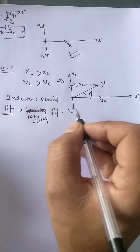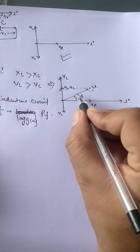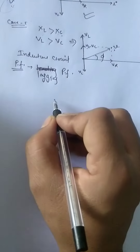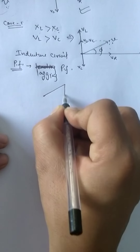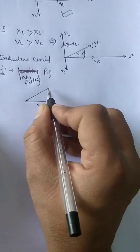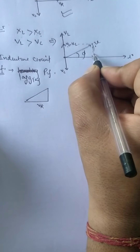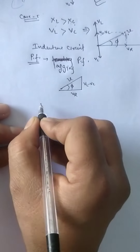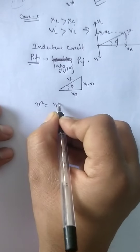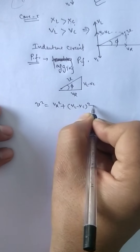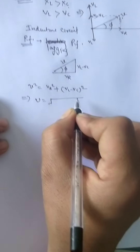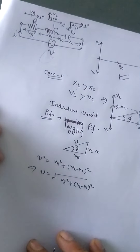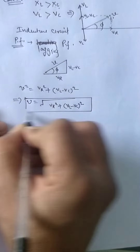Let's prove it with the impedance triangle. We can see this triangle — for the first case, Vr is the base, Vl − Vc is the height, and V is the hypotenuse. So V squared equals Vr squared plus (Vl − Vc) squared, which gives V equals the square root of Vr squared plus (Vl − Vc) squared. Let's call this equation number 1.